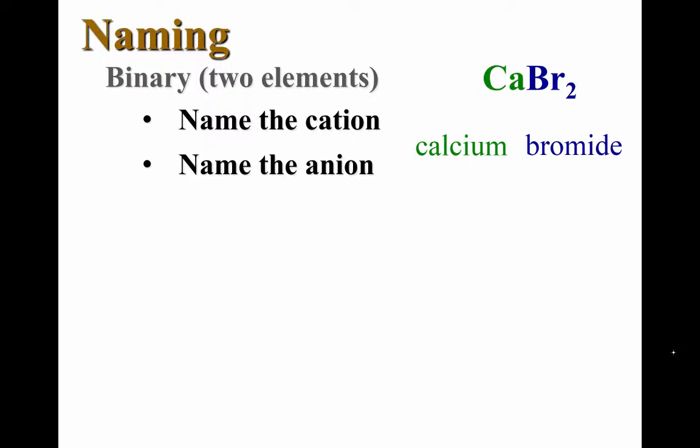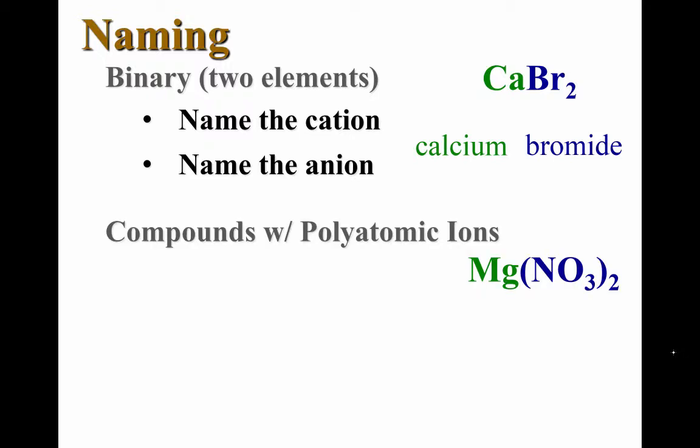If we had combined calcium with oxygen, we would call that calcium oxide, I-D-E ending. The next kind of compounds are those that contain polyatomic ions. Recall that we memorize the names of about a dozen of these. And this is one of the reasons why, so that we can name these compounds. If you don't remember the names of the polyatomic ions, you should look them up in your textbook or on the back of your periodic table.